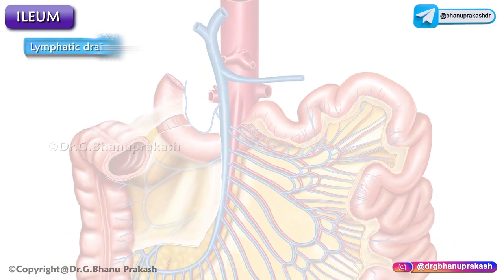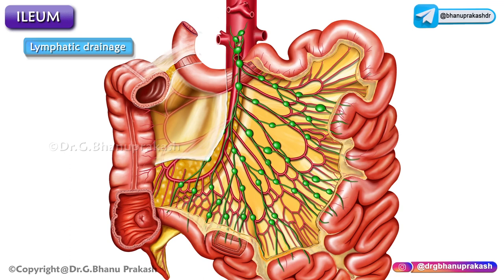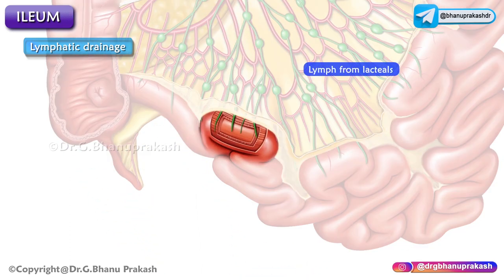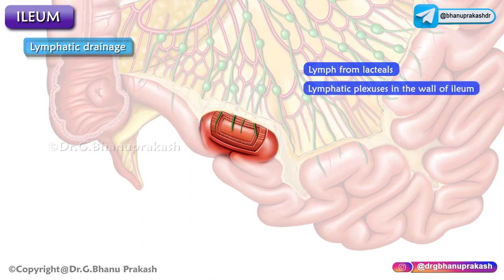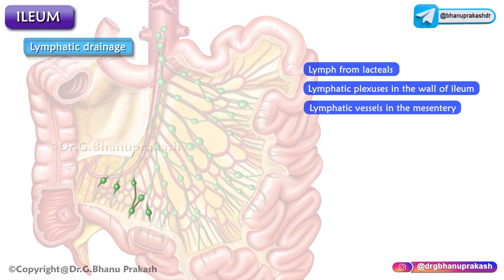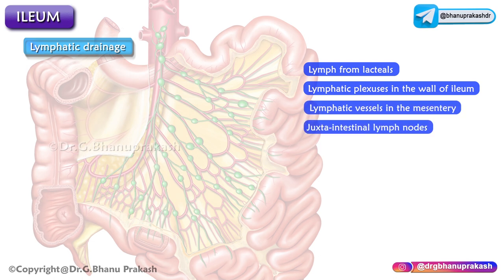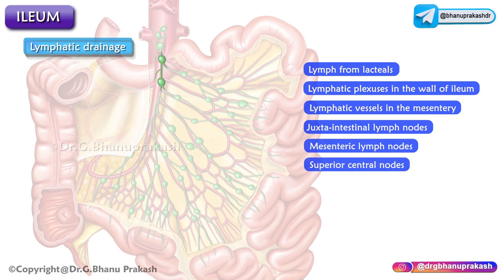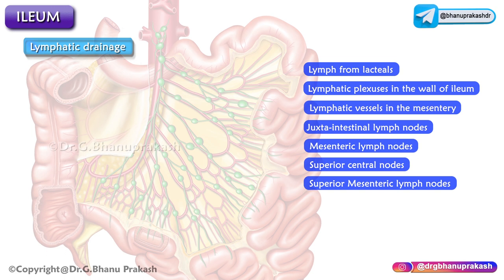Regarding lymphatic drainage, lymph forms in lacteals, which are specialized lymphatic vessels in the intestinal villi that absorb fat. These lacteals drain into the lymphatic plexus in the walls of the Ilium, then into lymphatic vessels in the mesentery, to juxtaintestinal lymph nodes, to mesenteric lymph nodes, to the superior central nodes, and finally into the superior mesenteric lymph nodes.